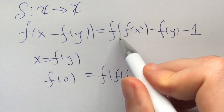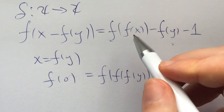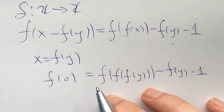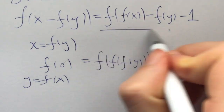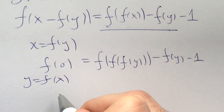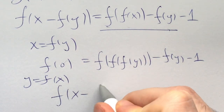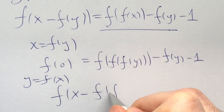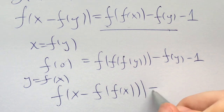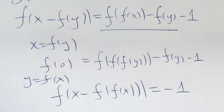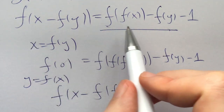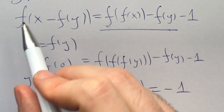Plugging in x equals f of y implies that f of 0 is equal to f of f of f of y minus f of y minus 1. Now this is cute, but at the beginning doesn't give us anything. So now let's try to cancel these two out by plugging in y equals f of x. What we get is f of x minus f of f of x is equal to negative 1.